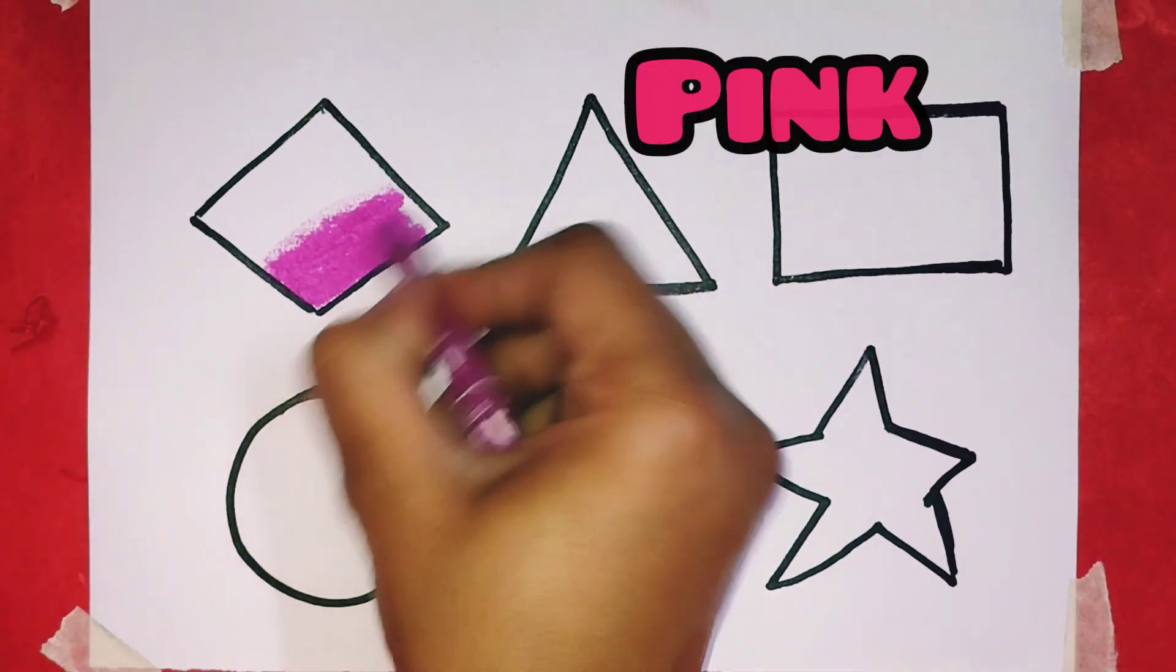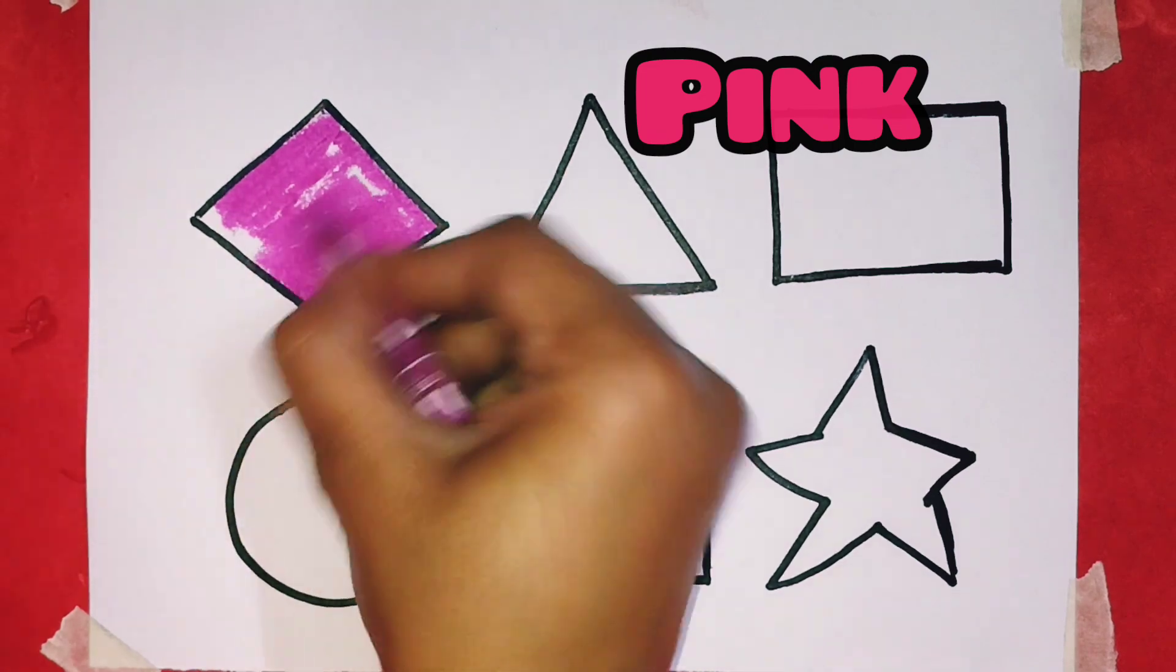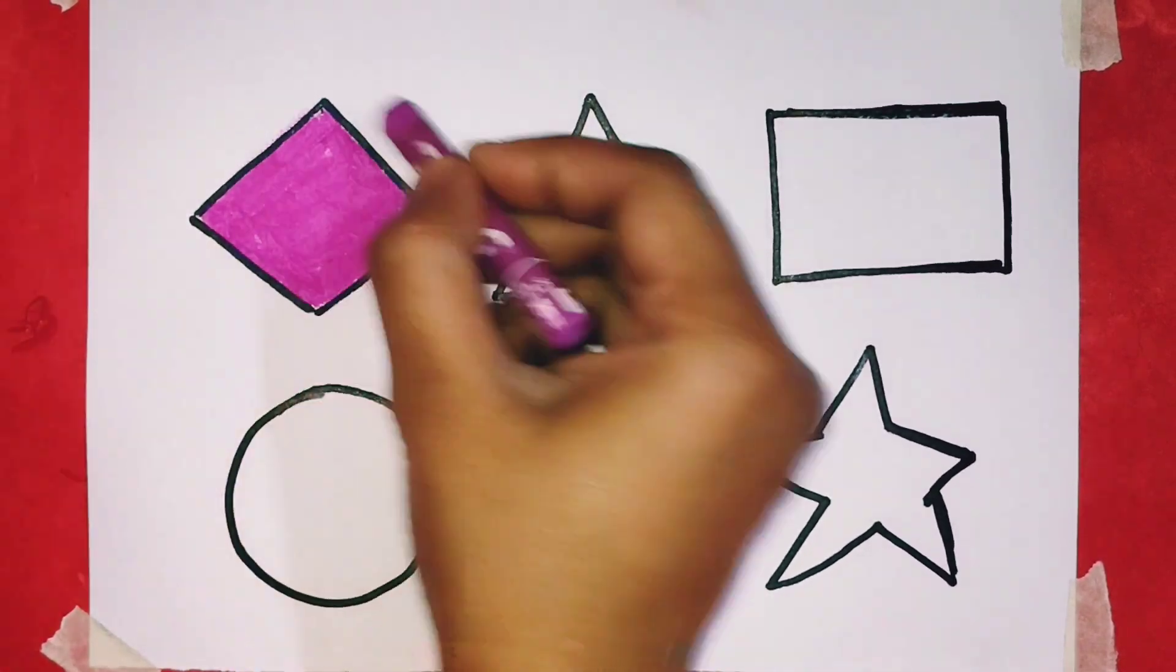Rhombus के लिए Pink Color. ये गुलाबी रंग तो बहुत ही सुन्दर दिख रहा है